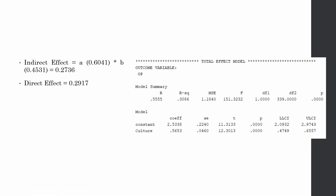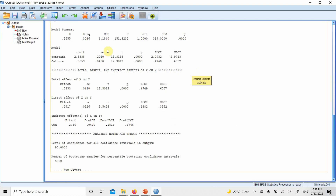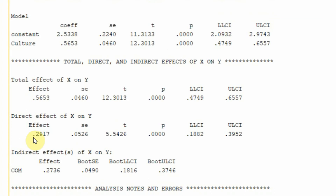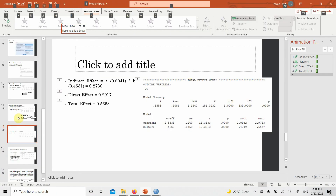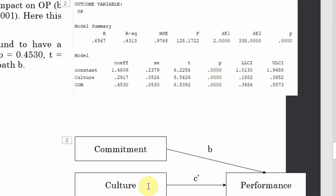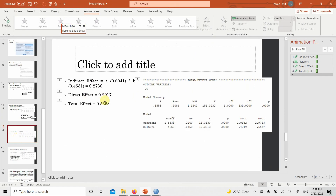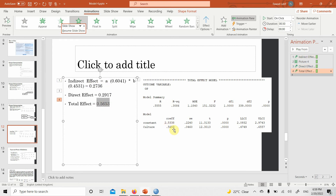The direct effect — that is the effect of culture on performance in the presence of the mediator — is 0.2917. It is in presence of the mediator because commitment is also in the model predicting performance. Add the indirect effect to this direct effect and you get your total effect of 0.5653, which is the sum of your indirect and direct effects.